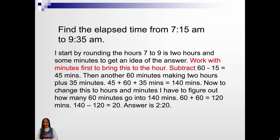It's important to figure out your minutes first and then finding out the hours. Now, to change this to hours and minutes, I have to figure out how many minutes go into 140 minutes. 60 plus 60 is 120 minutes. 140 minus 120 is 20. The answer is 2:20. 2 hours and 20 minutes.